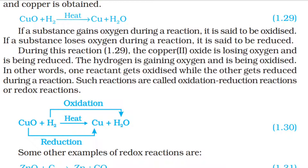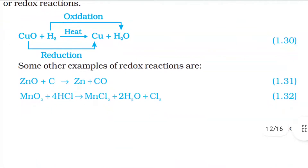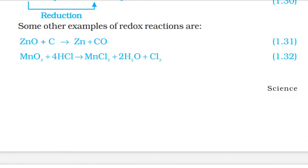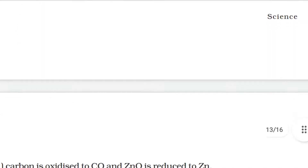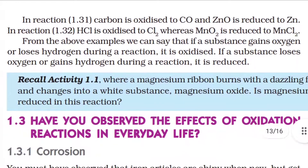Such reactions are called oxidation-reduction reactions or redox reactions. Some other examples of redox reactions are: ZnO + C → Zn + CO; and MnO₂ + 4HCl → MnCl₂ + 2H₂O + Cl₂. In the first reaction, carbon is oxidized to CO and ZnO is reduced to Zn. In the second reaction, HCl is oxidized to Cl₂ whereas MnO₂ is reduced to MnCl₂.